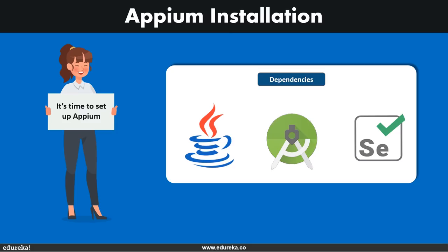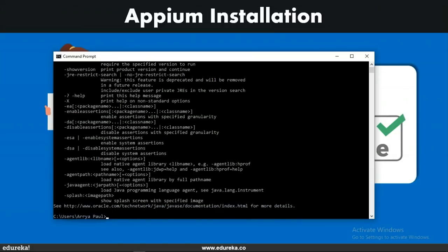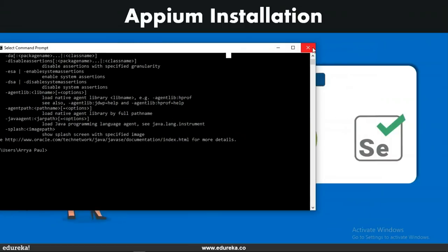Now let's get on with the demonstration part — actually installing Appium and integrating it with Android Studio. Appium has a bunch of dependencies for running seamlessly on your system, and they're easy to install. First, we need to install Java. To check if Java is already installed, go into your command prompt and type 'java' — if installed, it should show a help menu. To install Java, go to the Oracle page, which you can find by searching 'Java download' on Google, and you'll be redirected to the Java SE Development Kit 11 download page.